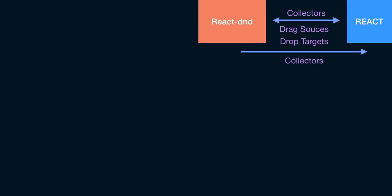Welcome back. In this video we are taking a look at what happens between React DnD and React itself, or other React components in your app. We introduced three abstract concepts: collectors, drag sources, and drop targets. The way these things get communicated to your React components is through collectors. Let's go through them one by one.